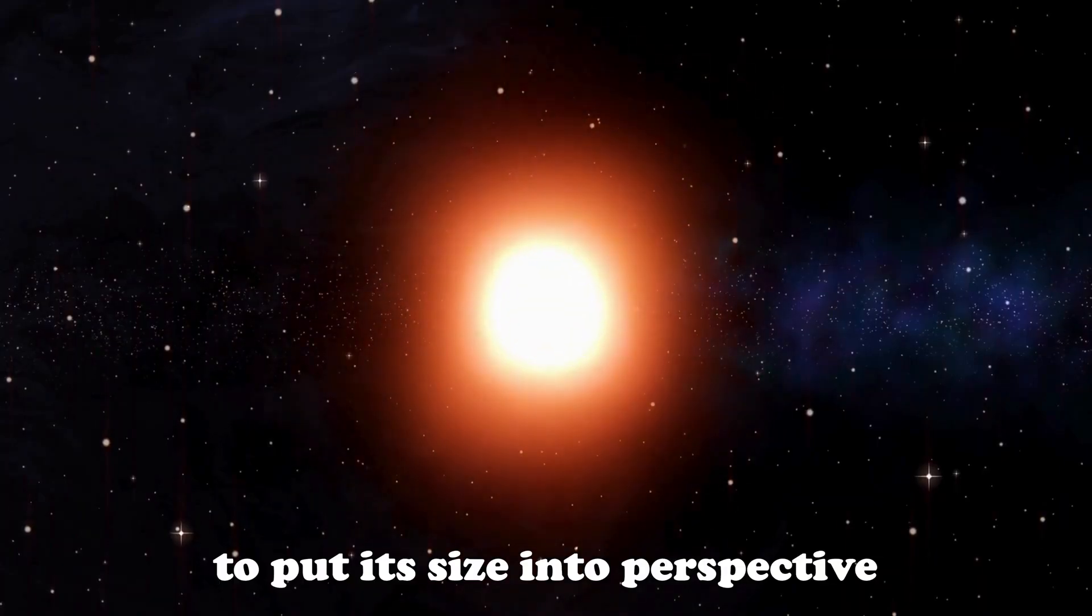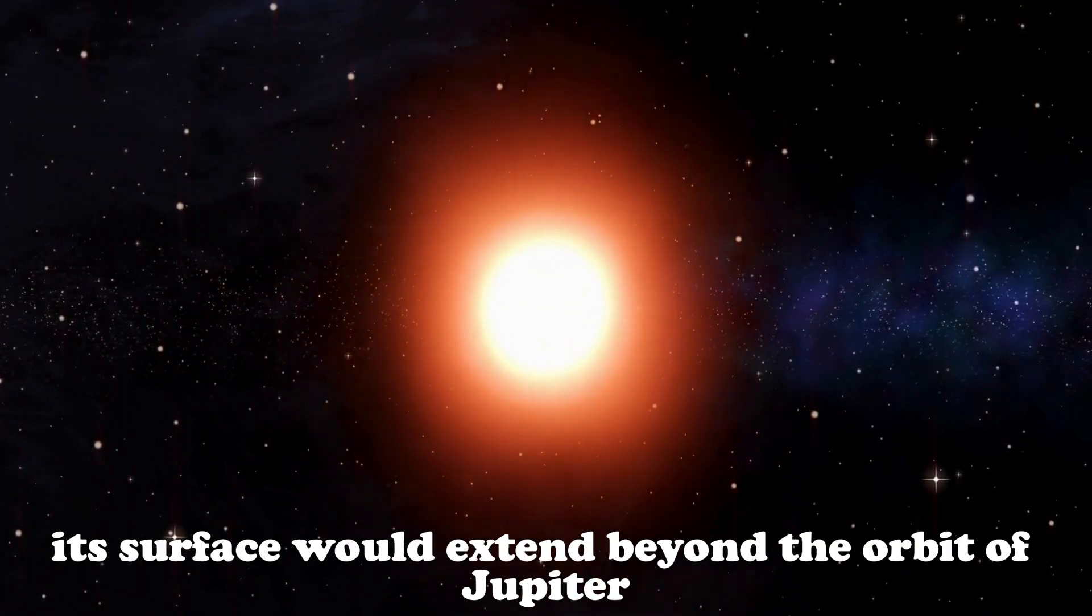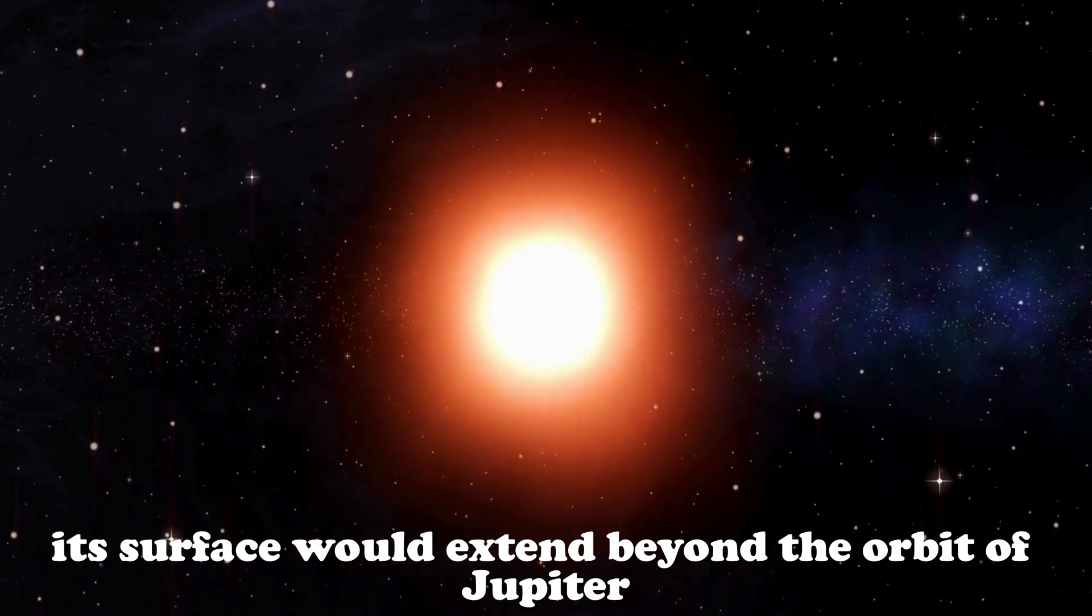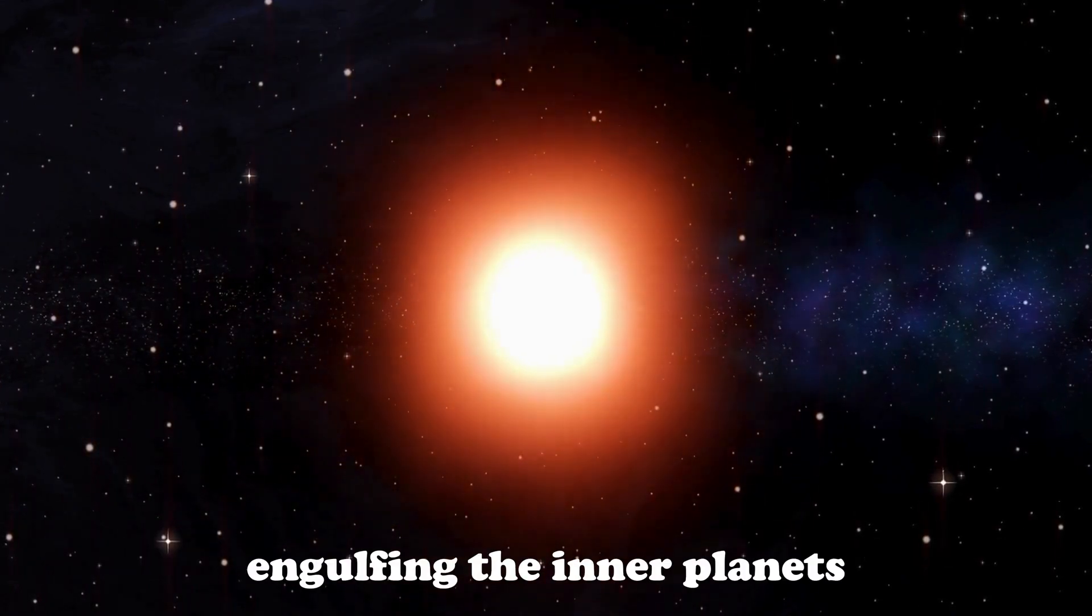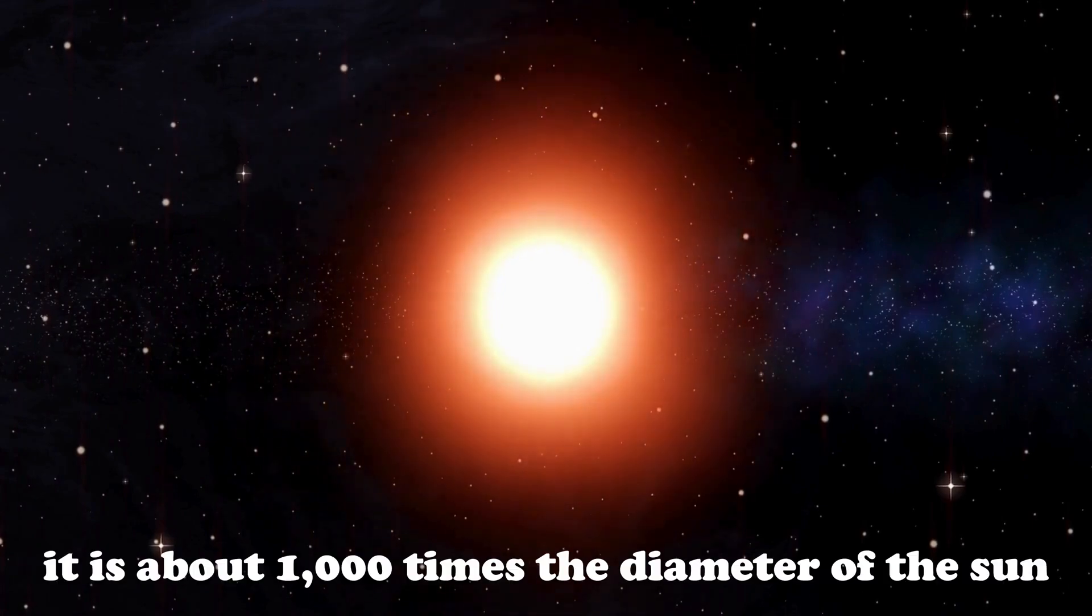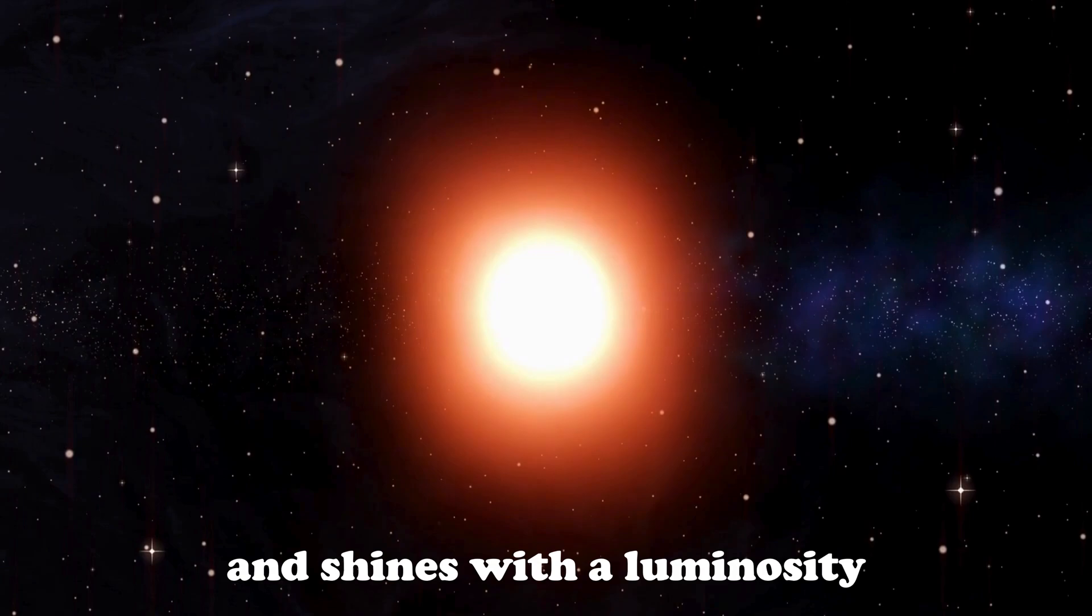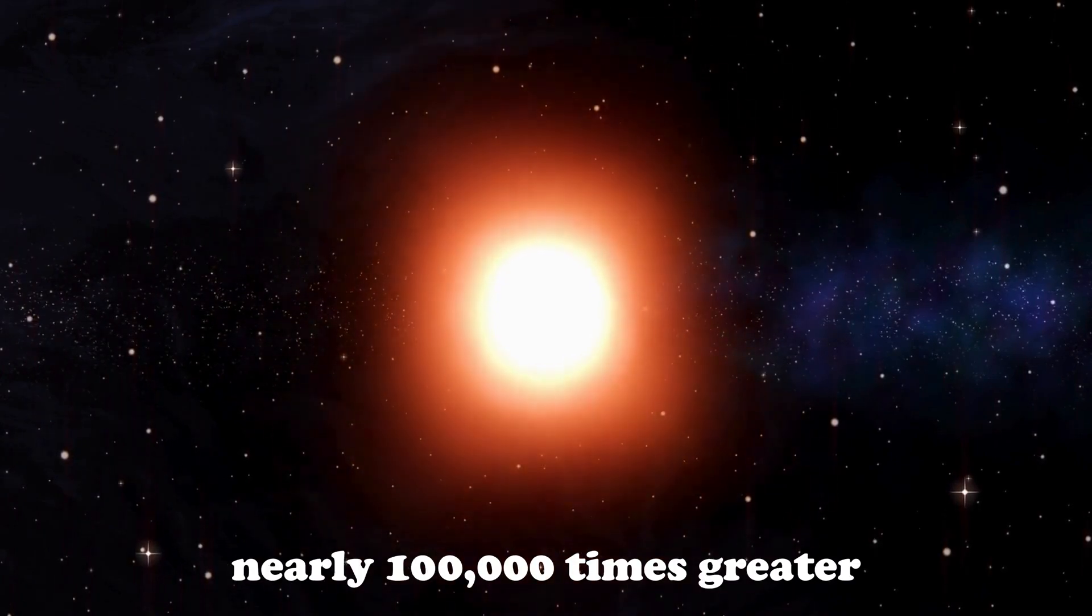To put its size into perspective, if Betelgeuse were placed at the center of our solar system, its surface would extend beyond the orbit of Jupiter, engulfing the inner planets and reaching well into the outer solar system. It is about 1,000 times the diameter of the Sun and shines with a luminosity nearly 100,000 times greater.